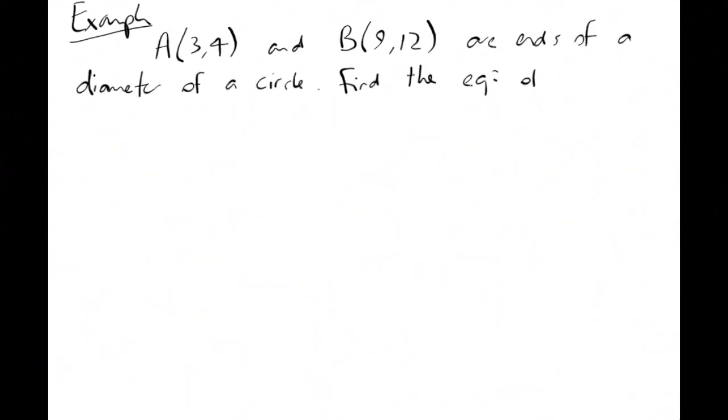Another kind of circle question we can get. Given the point A 3, 4 and B 9, 12, the ends of the diameter of the circle, find the equation of the circle. Well, if ever you're in doubt, draw a quick sketch.